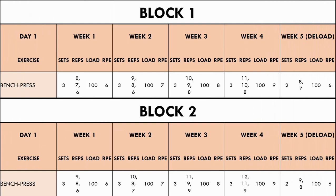Once the initial program is completed, we have a few options to select for the next program. The first is to not change the sets, RPE, and load at all. If the trainee hasn't been performing the exercise for very long, or they are a novice, this may be a good option. If they repeat the same set and rep scheme with the same RPEs, they may actually be able to perform more reps with the same load since they have become bigger and stronger from the last block. However, this method will only work for a short period of time before the trainee's performance plateaus.